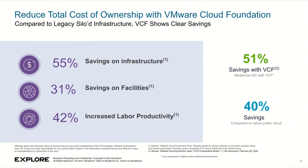Let's zoom out to this next slide: reduced total cost of ownership with VMware Cloud Foundation. If I'm a Broadcom VMware sales rep, this is my bumper sticker slide — right when the CEO walks in. So Drew, some big numbers here. As we look at TCO and value within VCF, it really boils down to three core areas: infrastructure savings, facility savings, and labor productivity. We do about 600 of these TCO/ROI models every quarter within our strategic segment. The averages come out to about 55% savings on infrastructure, 31% on facilities, and about 42% on labor productivity.